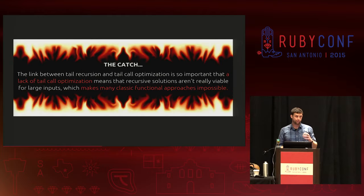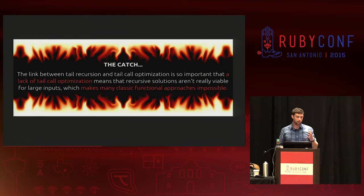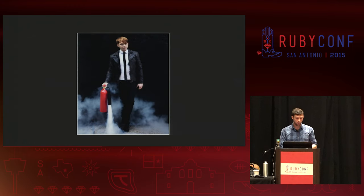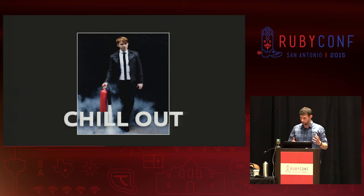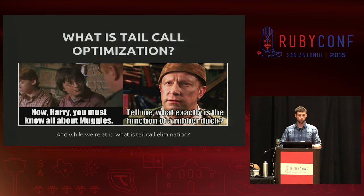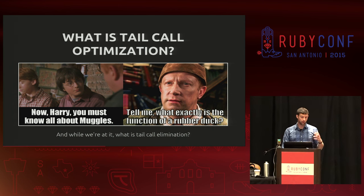The approaches are equivalent, but there's a catch. Tail recursion heavily depends on having tail call optimization, because there are some things you just can't do functionally without it — you'll simply run out of stack eventually. Depending on whether a method takes a block and uses special variables, it's usually somewhere under 10,000 frames by default before you run out of stack.